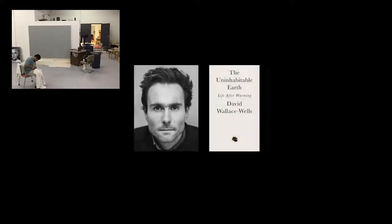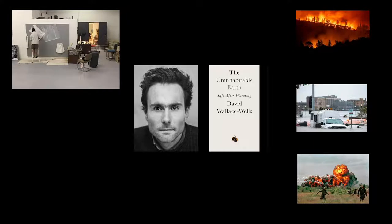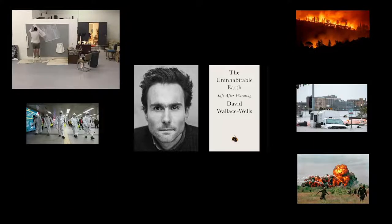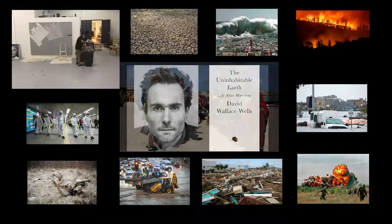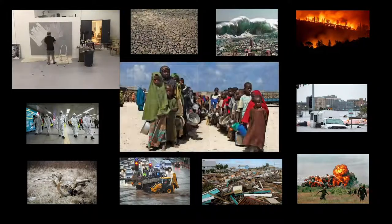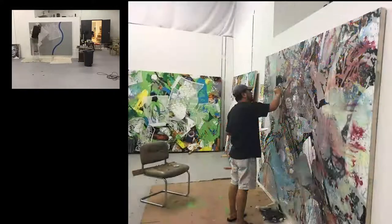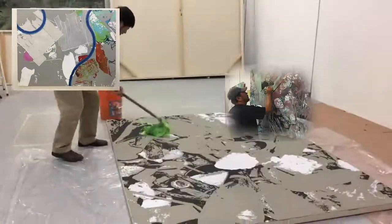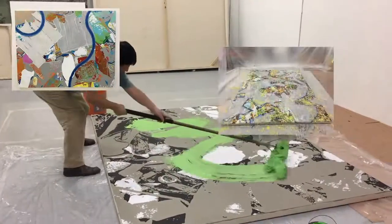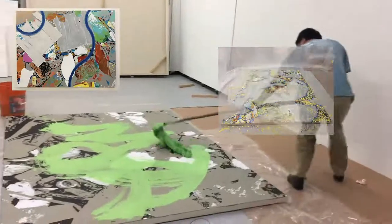At that time, I was reading the book The Uninhabitable Earth. The book claimed that environmental changes had caused human sufferings. So I paint the background with the theme of the aftermath of a natural or man-made disaster. I then use a method to break the images into abstract shapes.